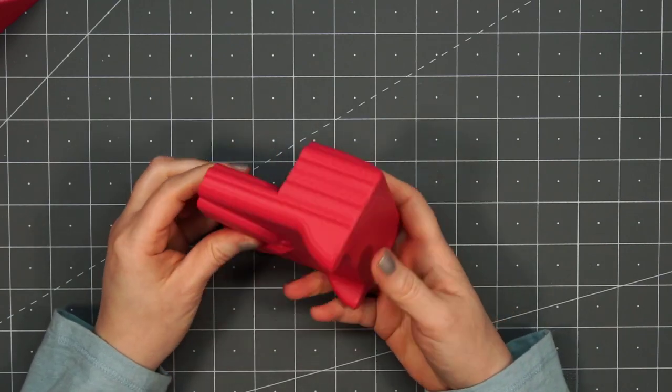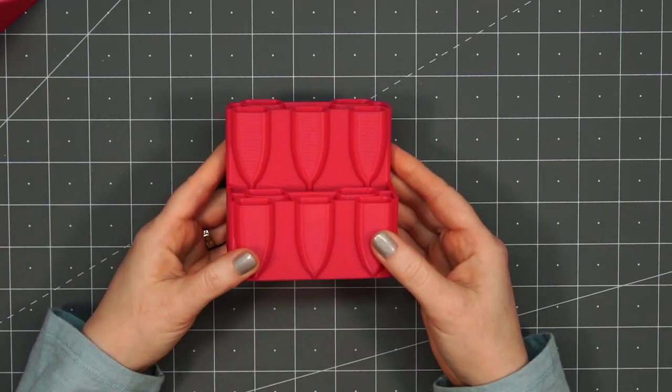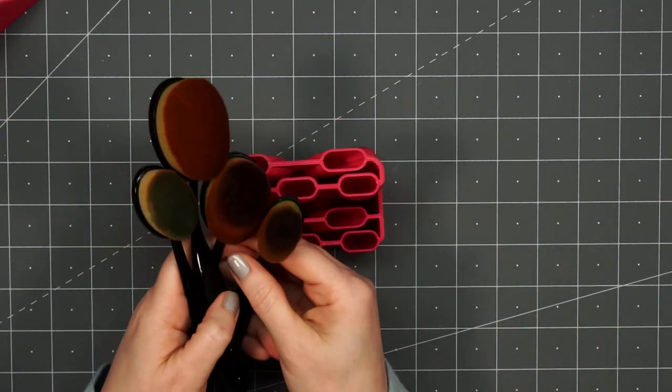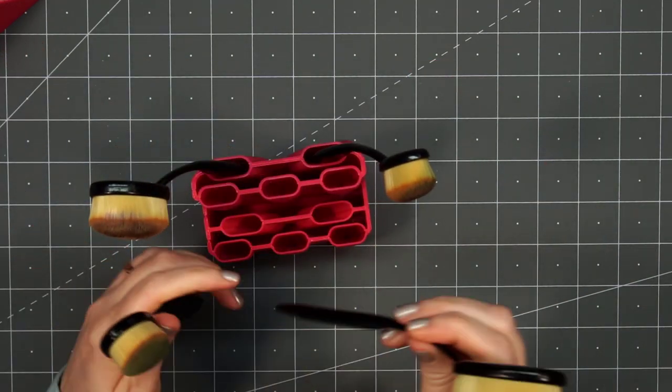Next is the Peacock Blender Brush Caddy. I don't do a lot of ink blending, but I do have a few of the blender brushes that fit in here. There are 10 different openings, so you could fill this up with 10 different brushes.